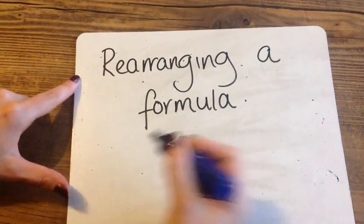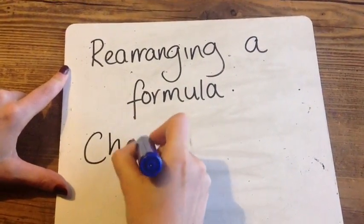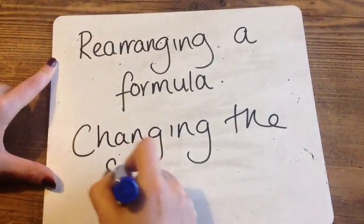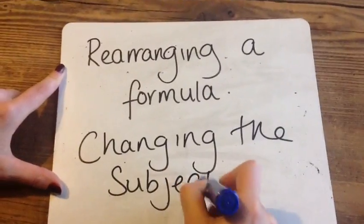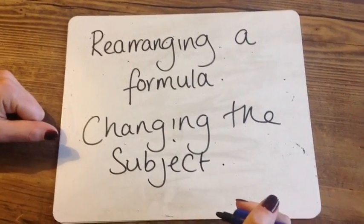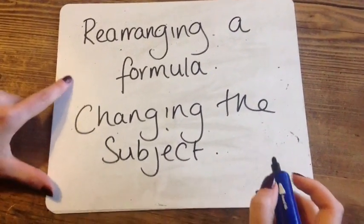Rearranging a formula is also known as changing the subject. The subject of a formula is the letter or variable that is on its own on one side of the equals.